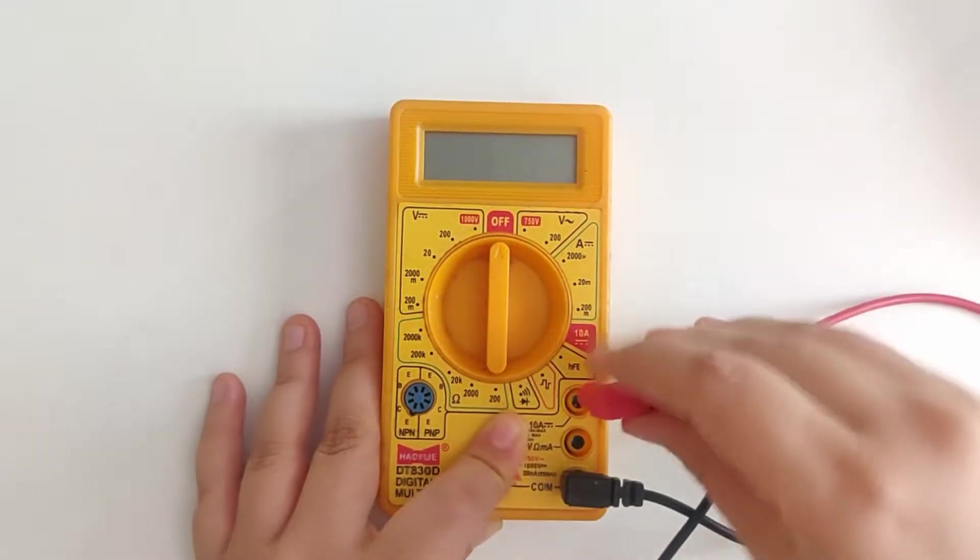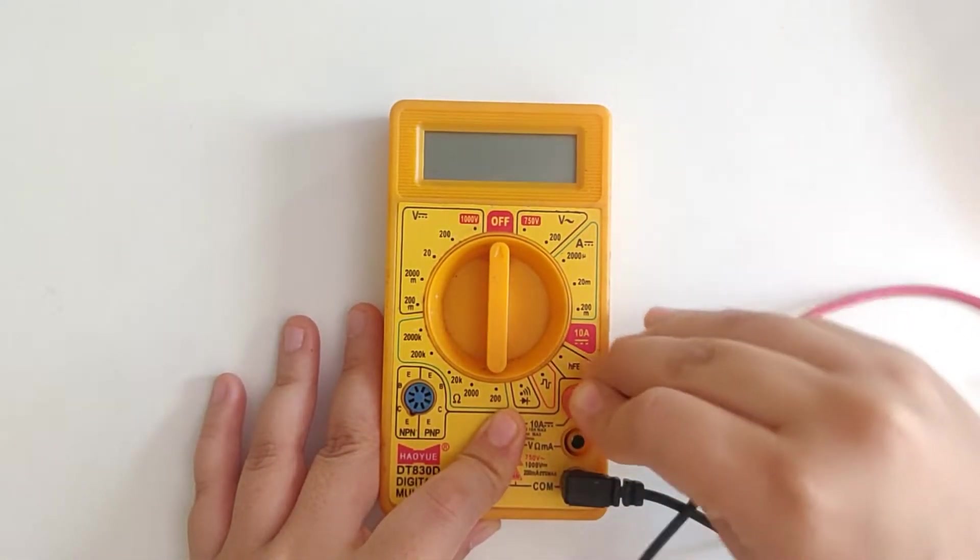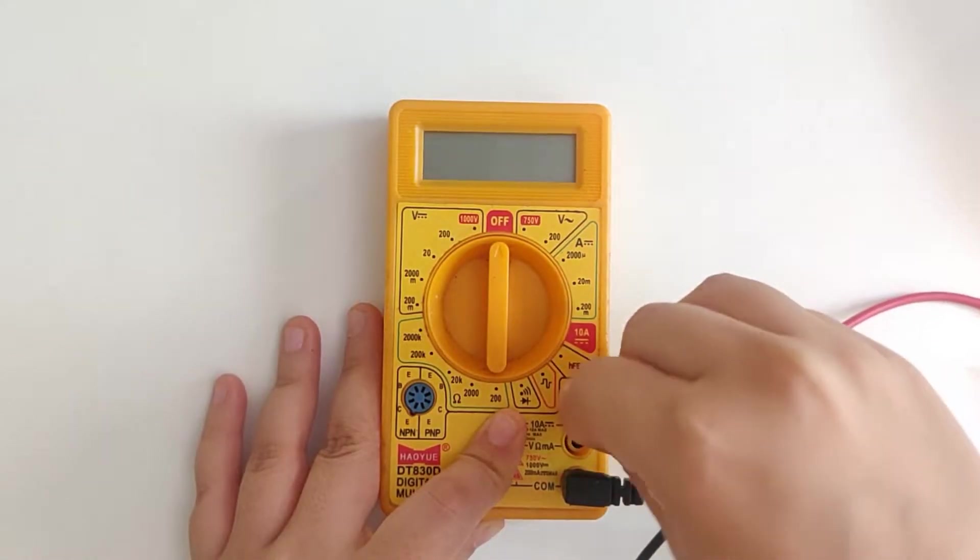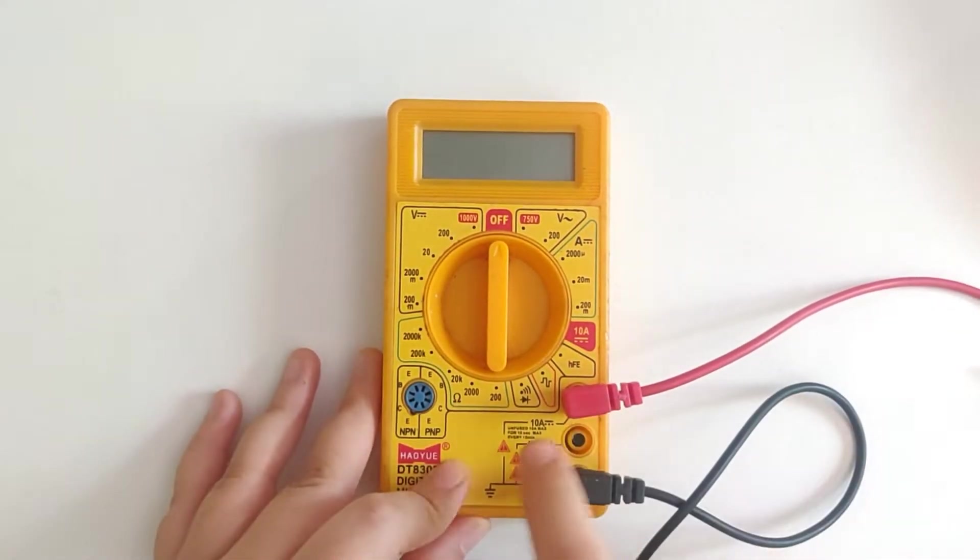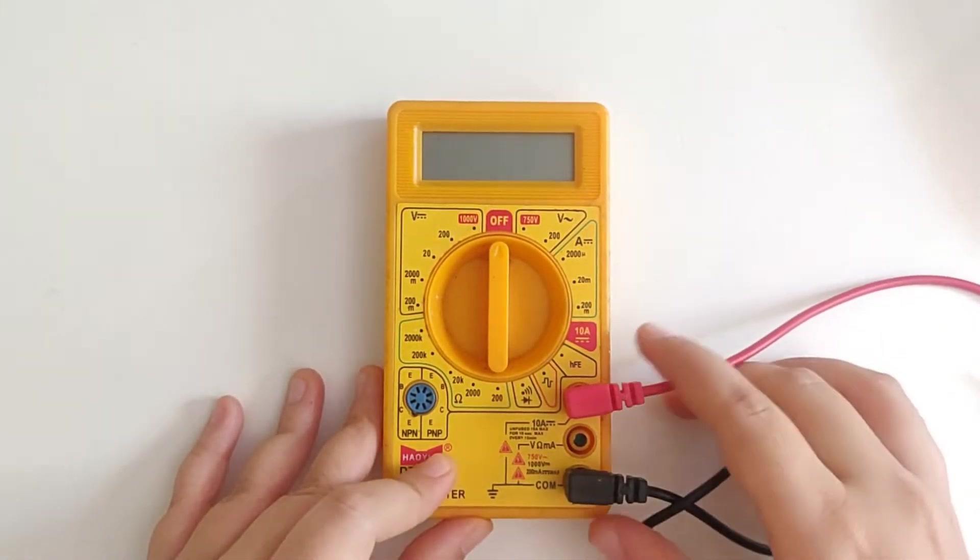And when you aren't too sure about the value, first of all, select the 10 amperes port. That is, insert the red lead of the multimeter inside the 10 amperes slot.